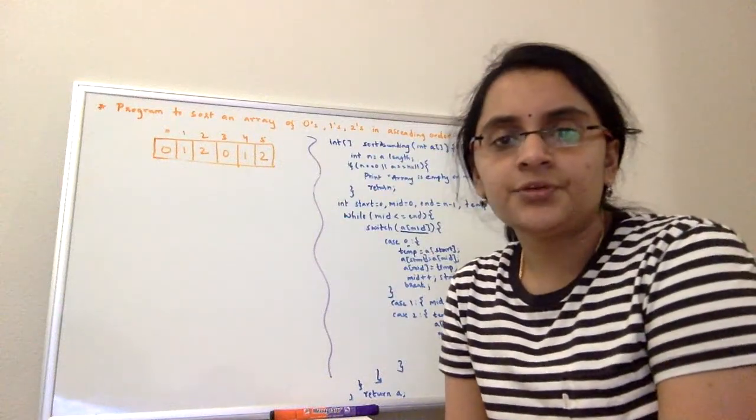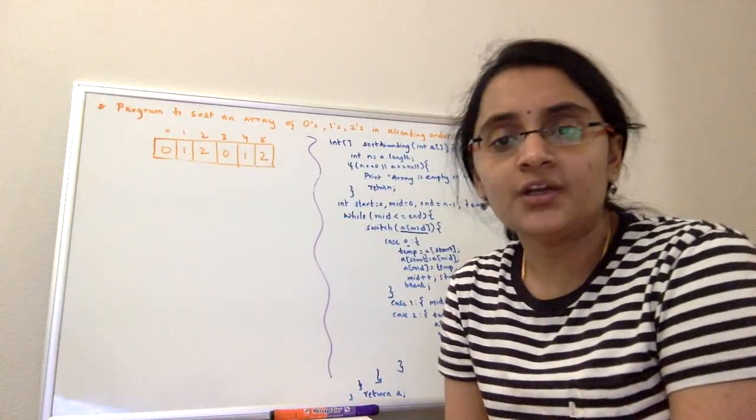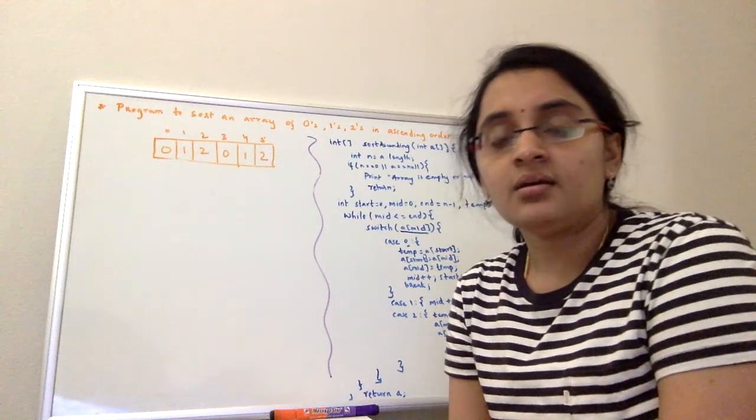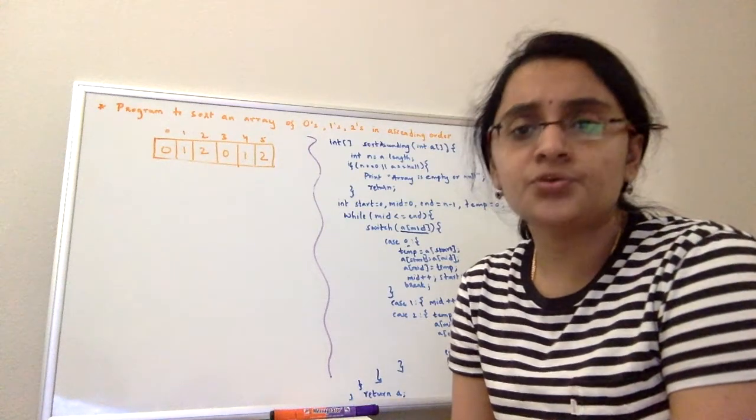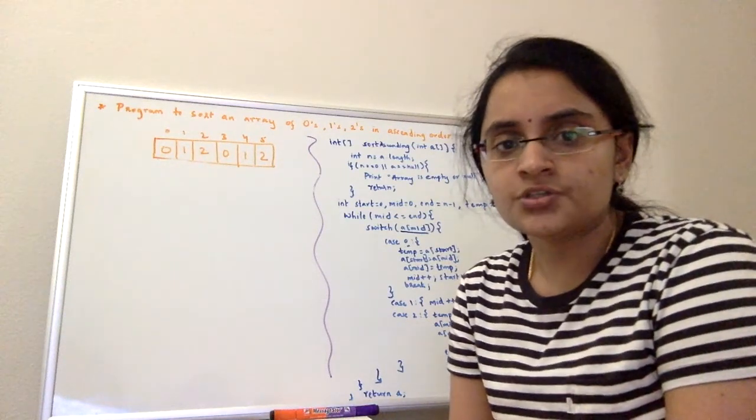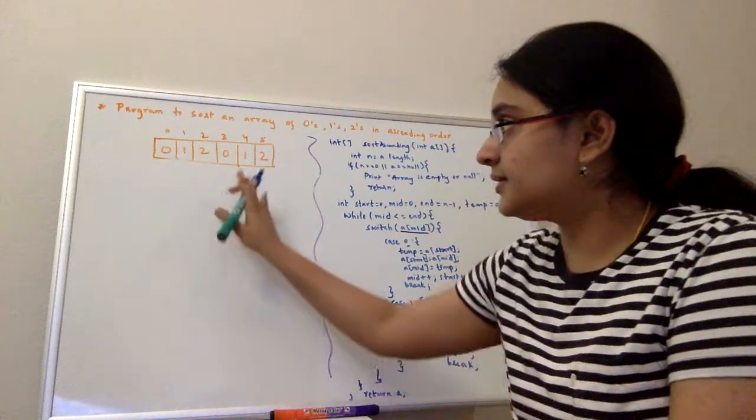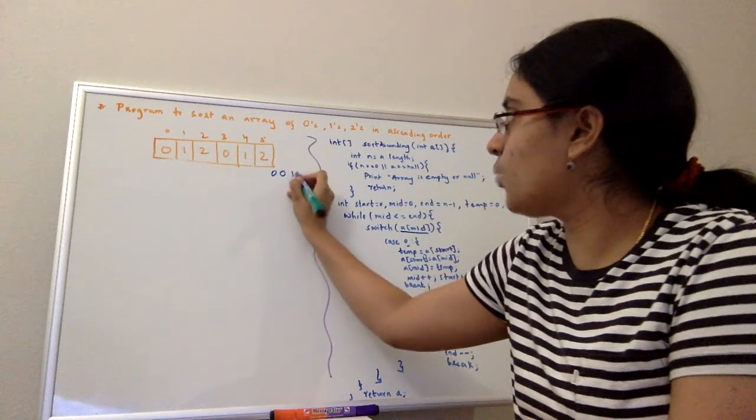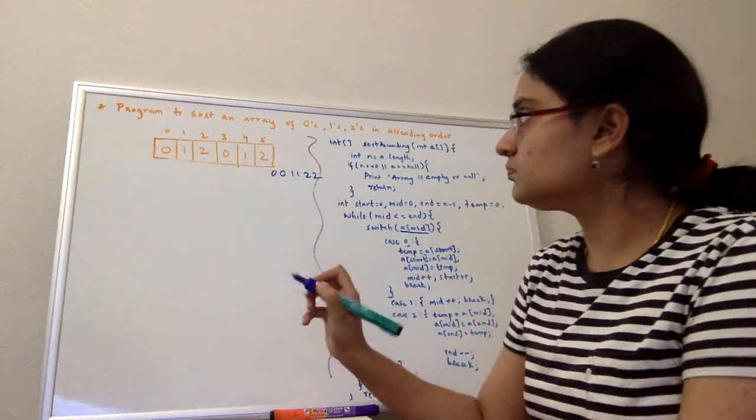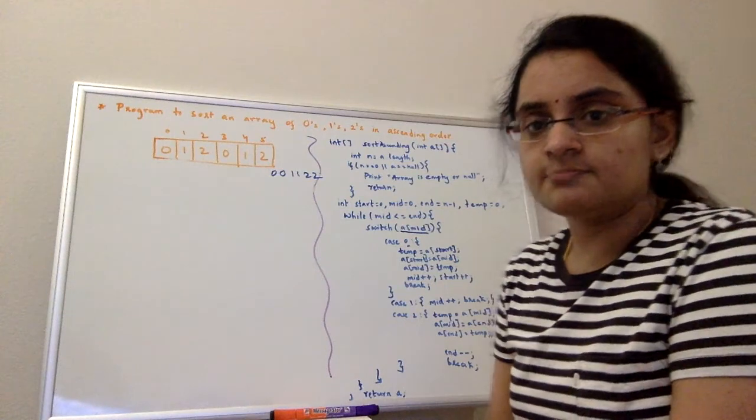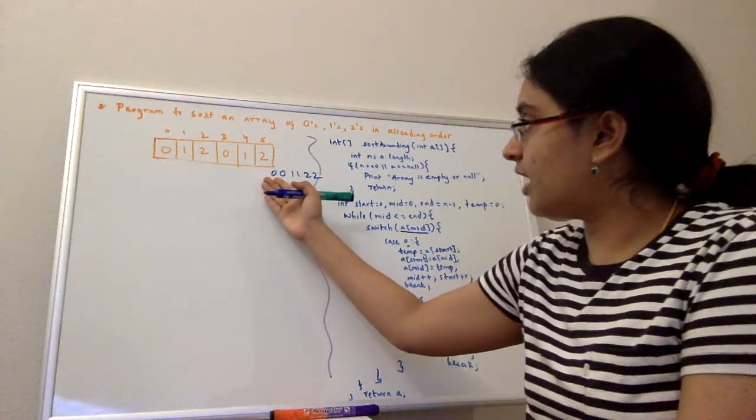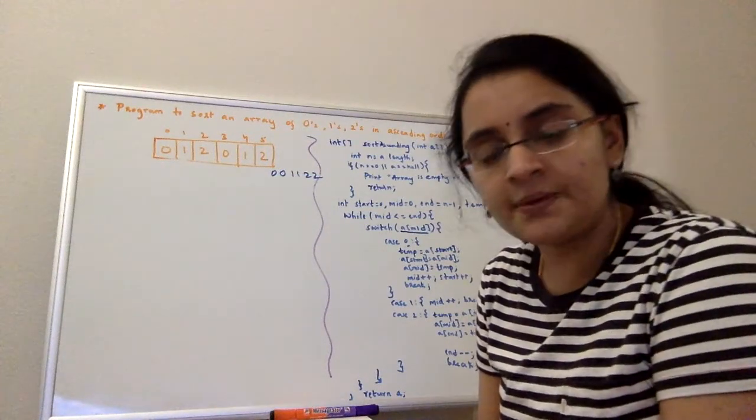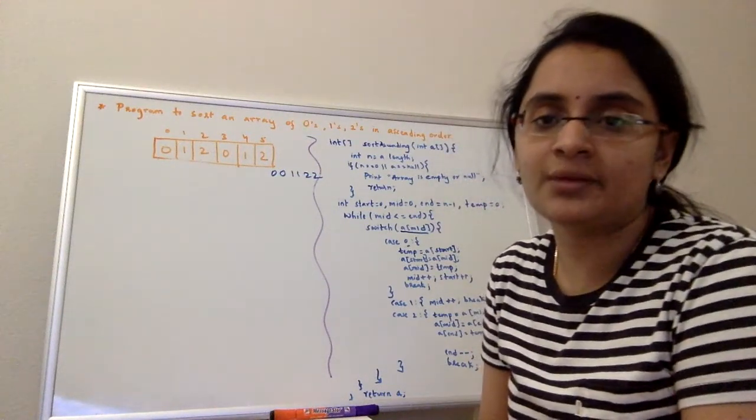Hi, now I'm going to solve a problem which is to sort an array of zeros, ones, and twos in ascending order, meaning this array only has three numbers: zeros, ones, and twos. When taken this as an example, your output array should look something like 0, 0, 1, 1, 2, 2. So how do you implement this in a program using a programming language?